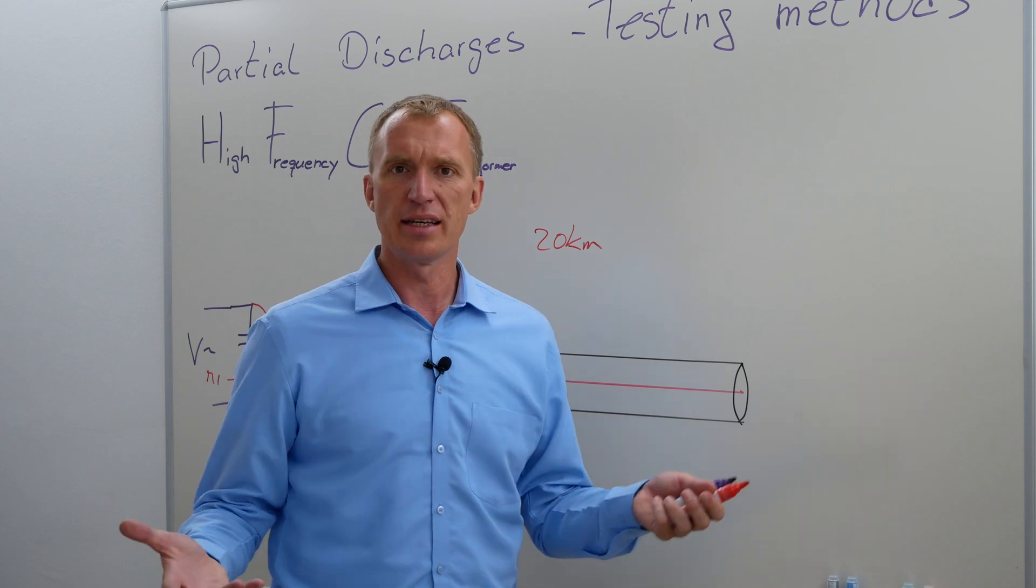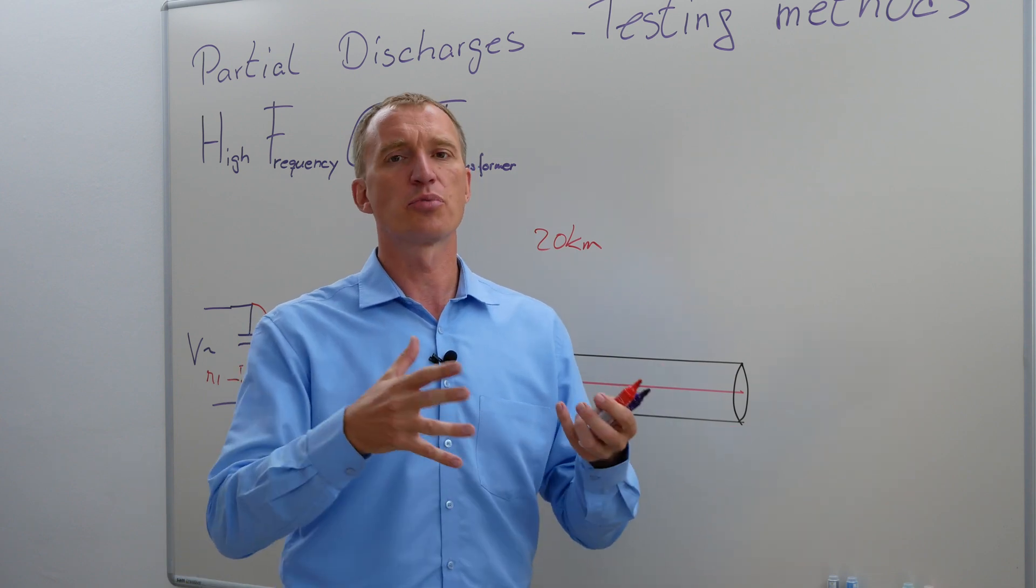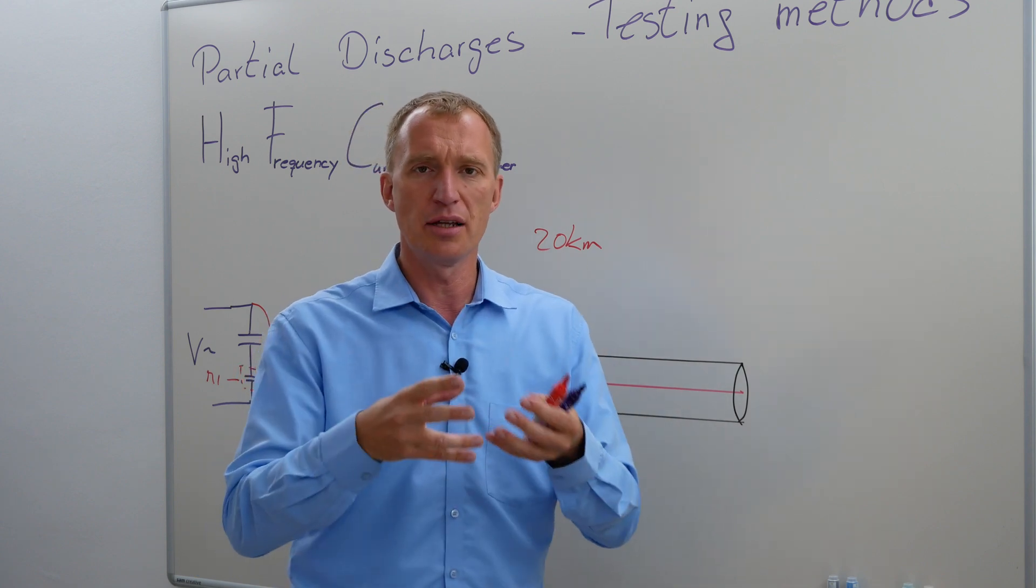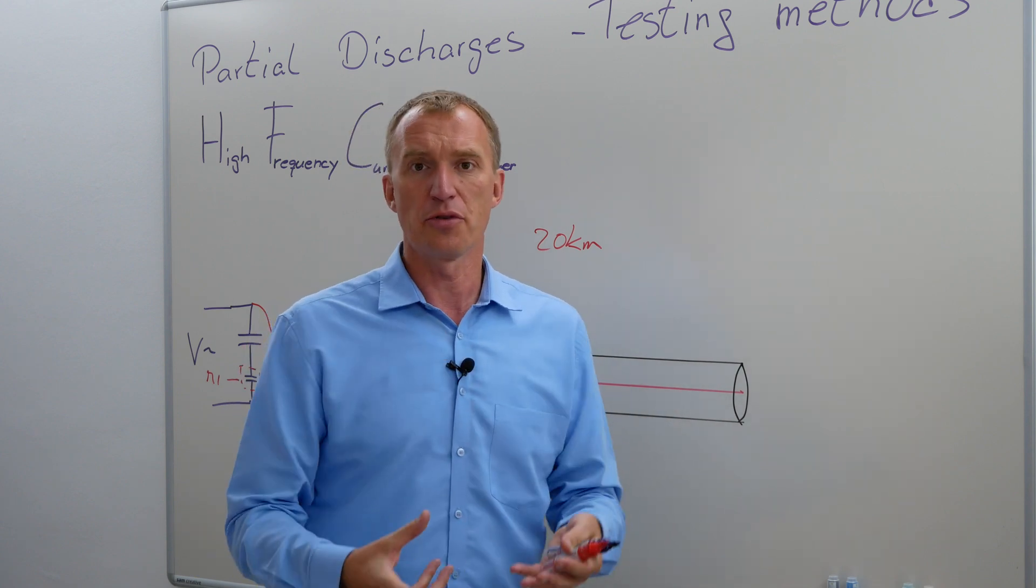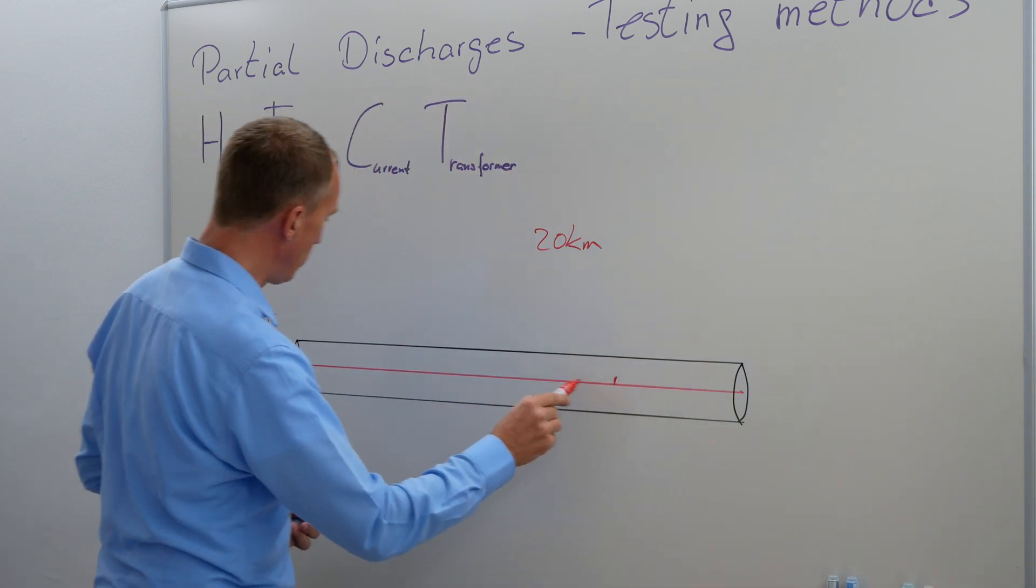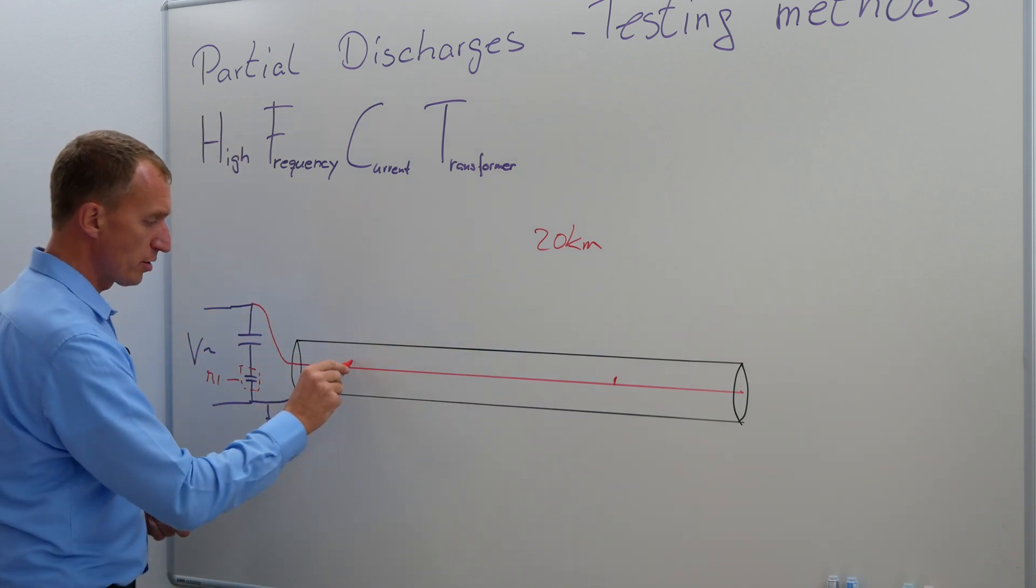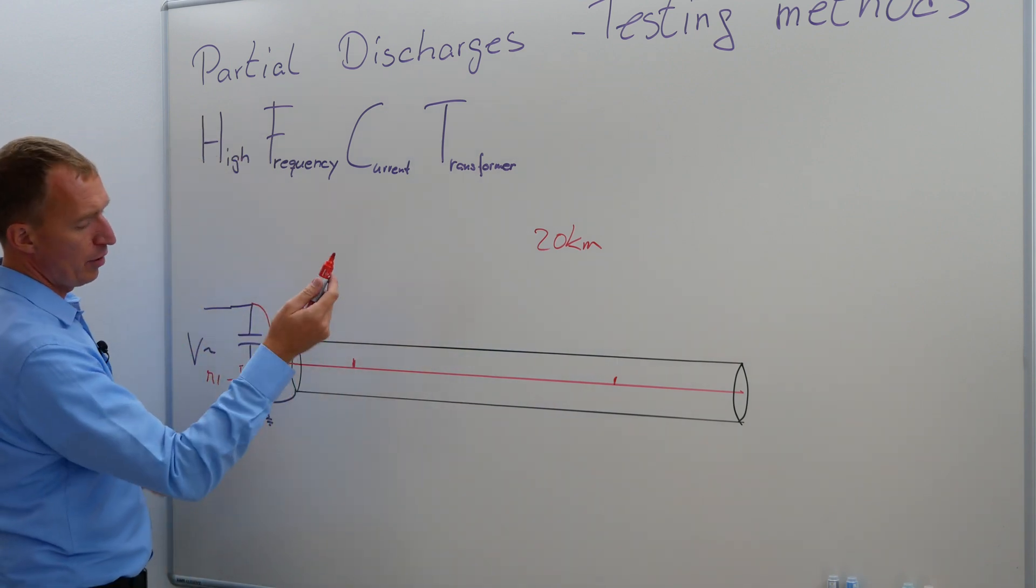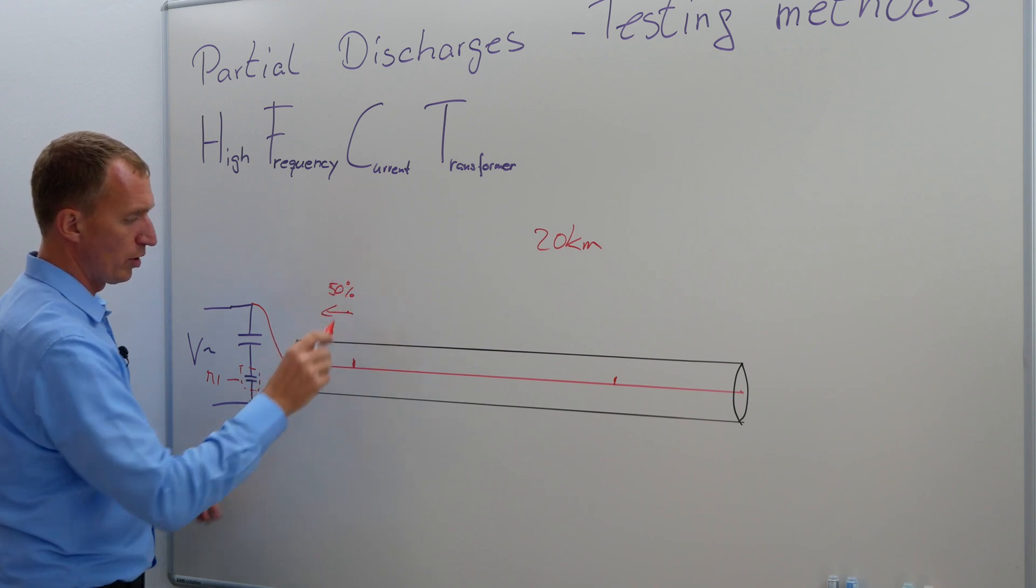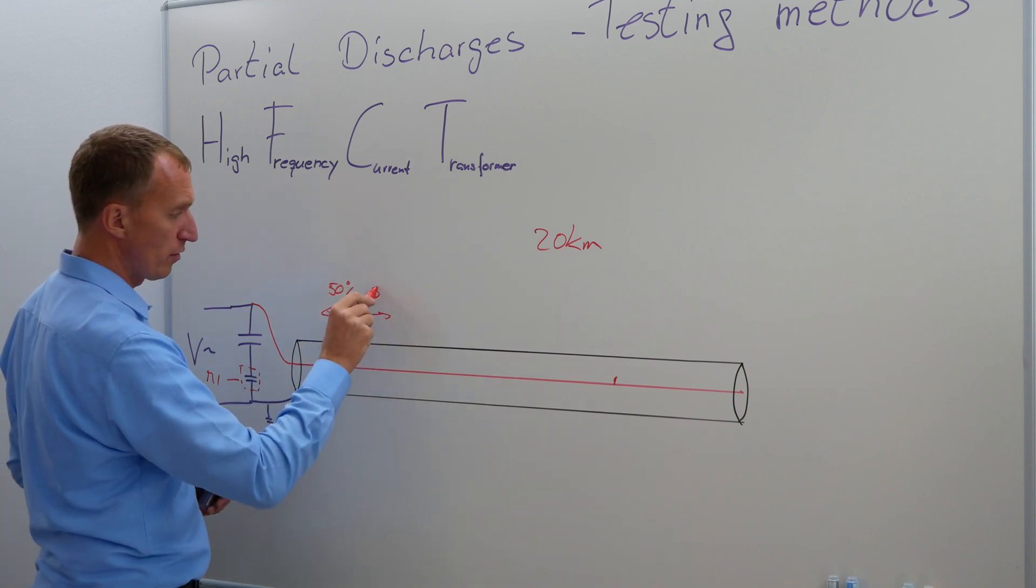However, your background noise is kind of high. And now you have a problem to figure out partial discharge or not. And very often you cannot rely on the fact and or be sure that if a partial discharge happens here, that you really are able to see it. Or even if a partial discharge happens here, about 50% of the charge will travel in this direction, and about 50% of the charge will travel in this direction.